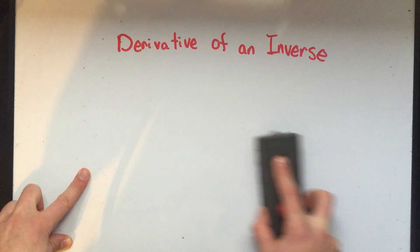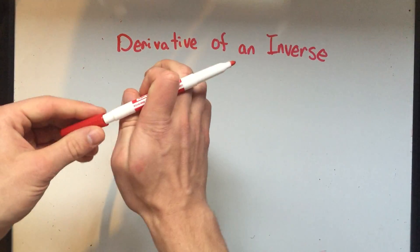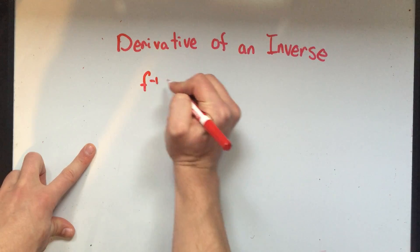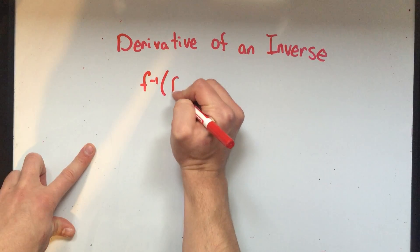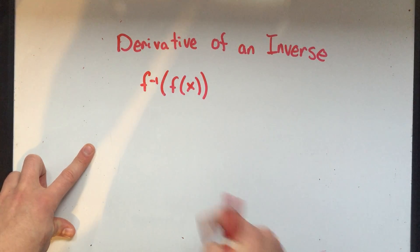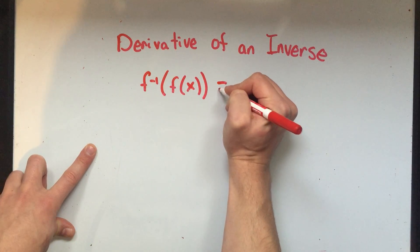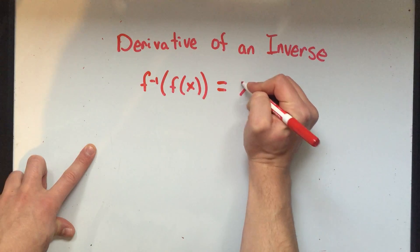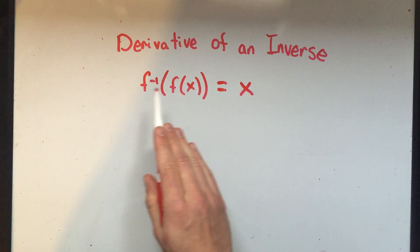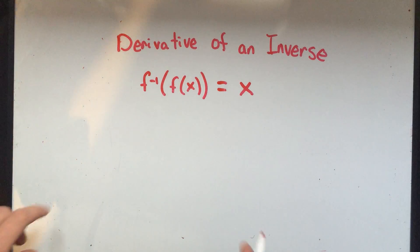To do this problem, I'm going to use one of the definitions of the inverse. If you take the inverse function and evaluate it at the original function, the f and the f inverse undo each other and I just get x or whatever's inside. So f inverse of f of a thousand would equal a thousand. That's a common algebra problem.